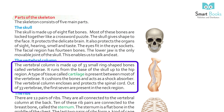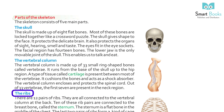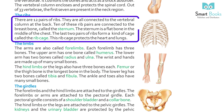The vertebral column runs from the base of the skull to the hip region. A type of tissue called cartilage is present between most of the vertebrae. It cushions the bone and acts as a shock absorber. The vertebral column encloses and protects the spinal cord. Out of 33 vertebrae, the first seven are present in the neck region.